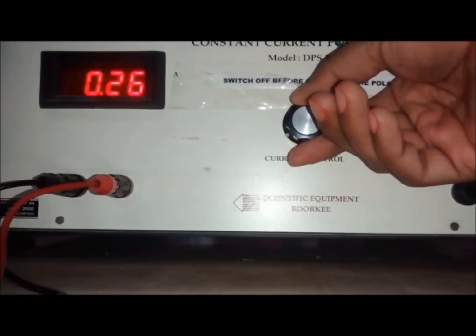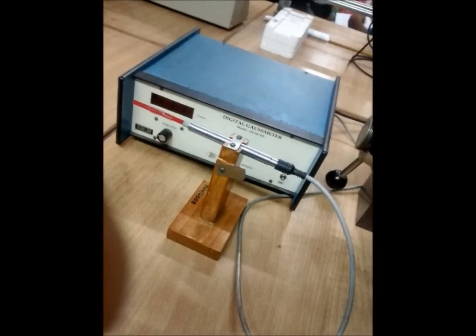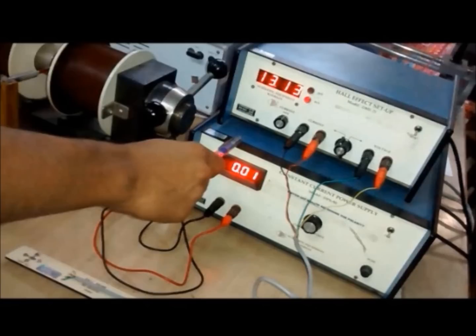This develops magnetic field across electromagnets. This is the gauss meter along with the sensor which will be used to measure the magnetic field between the two poles of electromagnet. Current is supplied by the constant current source.